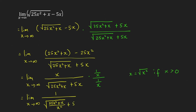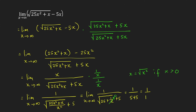And you have plus 5 outside the radical. So we can write this as limit as x approaches infinity of 1 over the square root of 25 plus 1 over x, plus 5. Now the limit is clear. As x goes to infinity, 1 over x goes to 0. So the limit is just equal to 1 over — square root of 25 is 5 — plus 5. That is equal to 1 over 10.